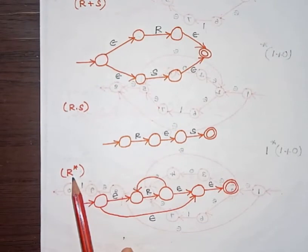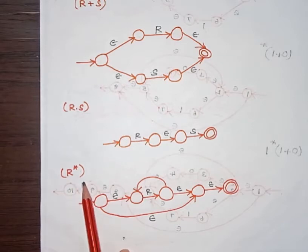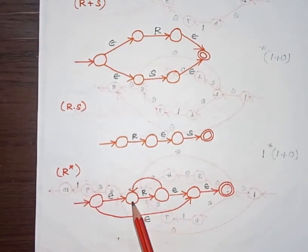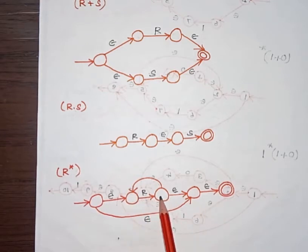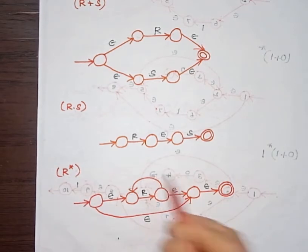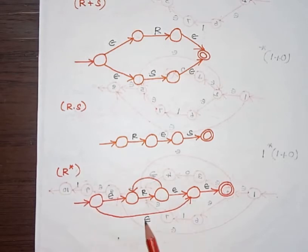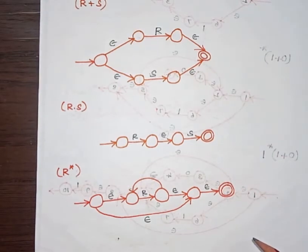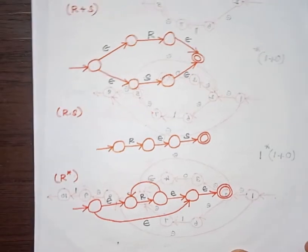Coming to closure — when we say closure it represents zero or more transitions. When this is the case, we construct the NFA like this. From one state to another we have a transition on input A, while the surrounding transitions are happening on epsilon. There is a transition from one node back and also forward, both happening on epsilon. With these fundamentals we can construct the NFA for any given regular expression.